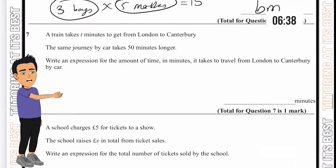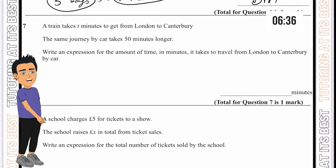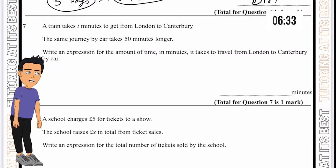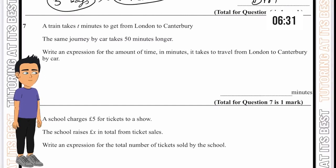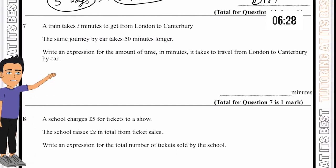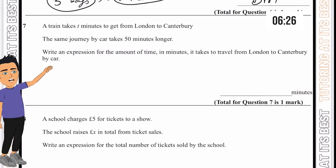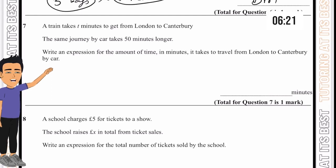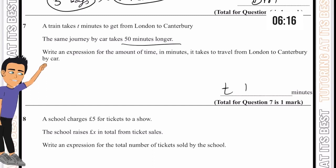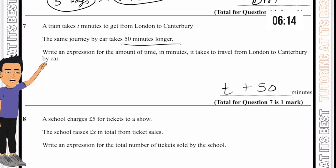Question 7. A train takes t minutes to get from London to Canterbury. The same journey by car takes 50 minutes longer. Write an expression for the amount of time it takes. We start with t minutes and it takes 50 minutes longer, so we simply add 50 to this. That is now an expression for London to Canterbury by car.